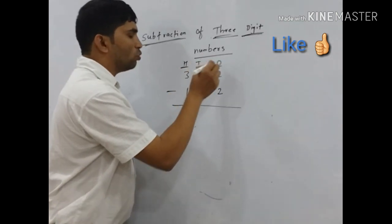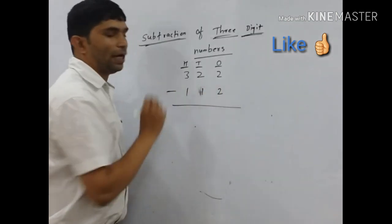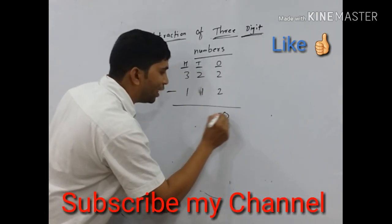Like O means ones place, number 2 subtract with 2. 2 minus 2 we get 0.